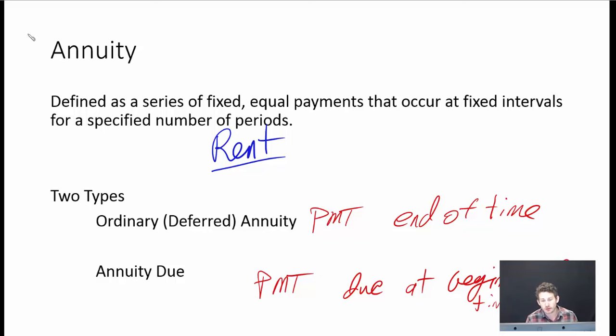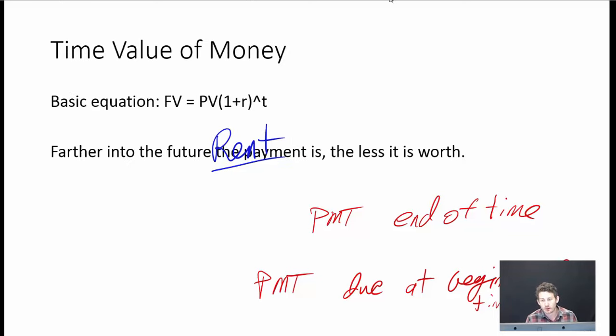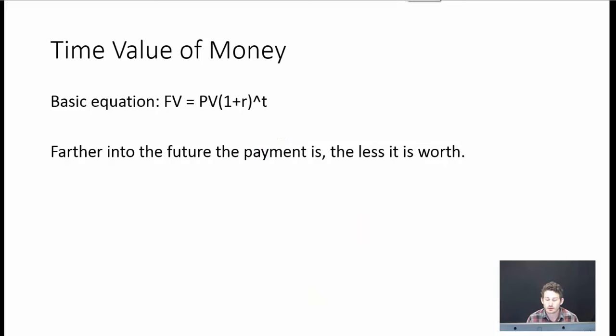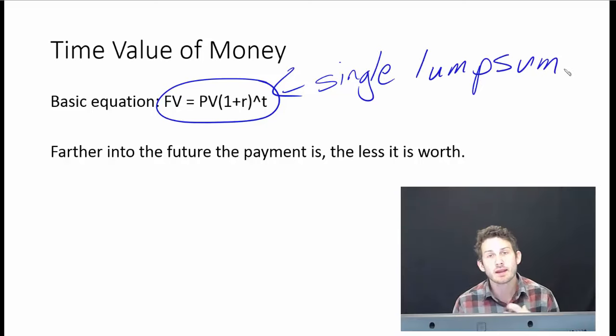Now, the valuation on annuities is very similar to what we've been looking at before with the basic time value of money. We have our basic equation here, the future value equals present value multiplied by one plus R to the T power. But this one that we're looking at here is that this is for a single lump sum. So what we're looking at now is that we're actually making a multitude of different payments. We are making a payment in time period one, a payment in time period two, a payment in three, four, five, six, seven, et cetera.